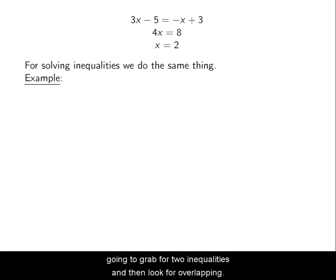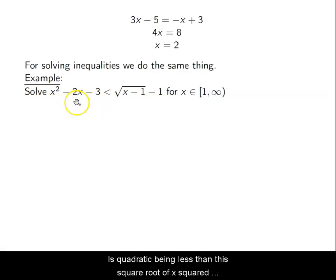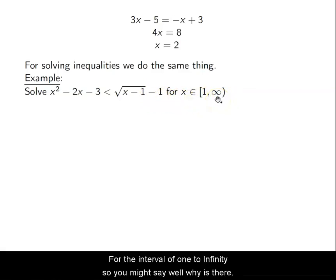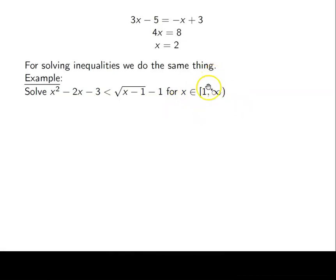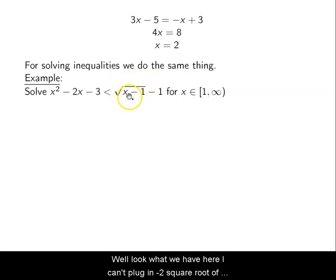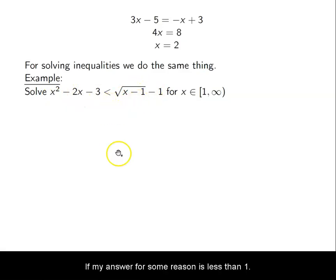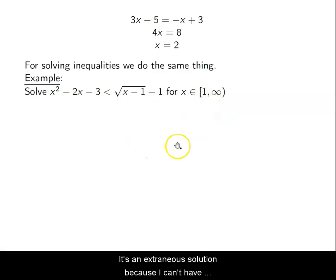We're just going to graph our two functions and look for their overlapping areas. So if I want to solve the quadratic being less than the square root — x² - 2x - 3 < √(x - 1) - 1 for the interval [1, ∞) — you might ask why there's this limitation. Well, I can't plug in negatives to √(x - 1), so this is the domain restriction for the square root portion. Even if I solve algebraically, any answer less than 1 is an extraneous solution.